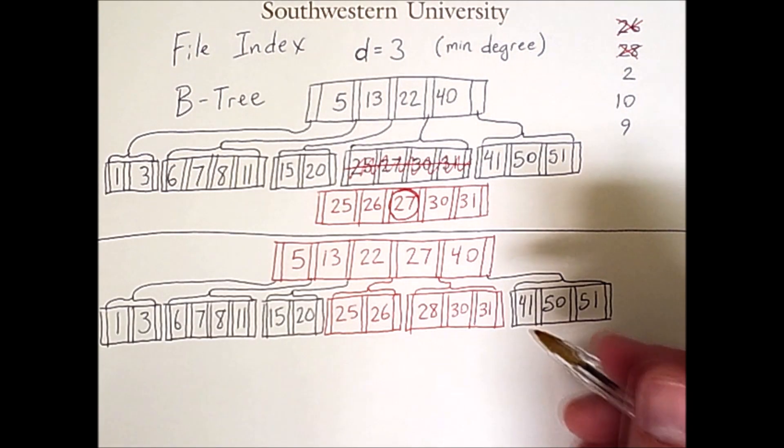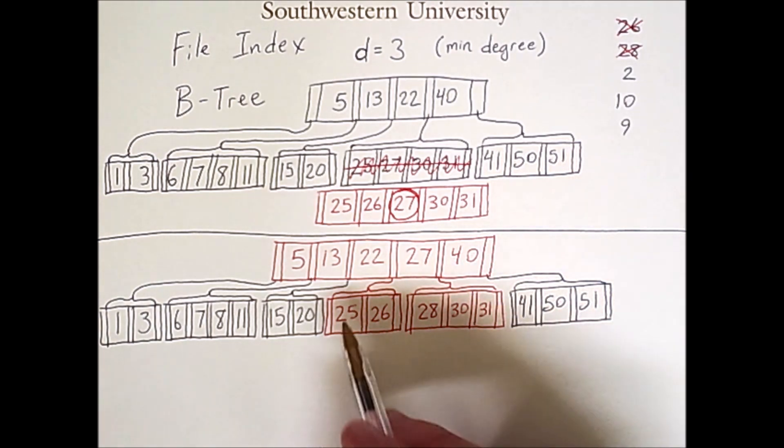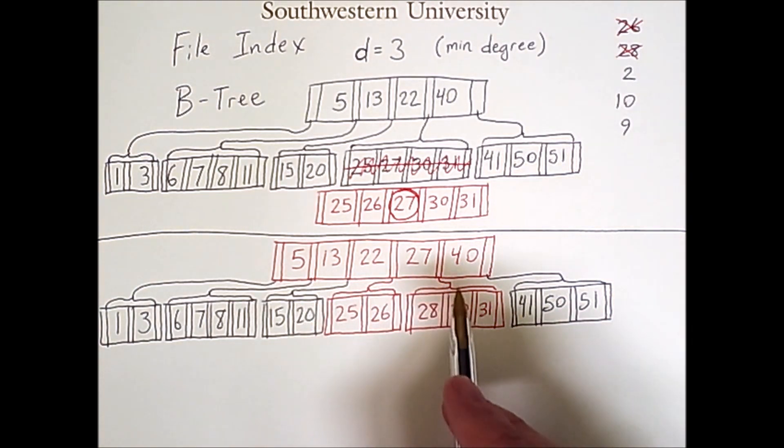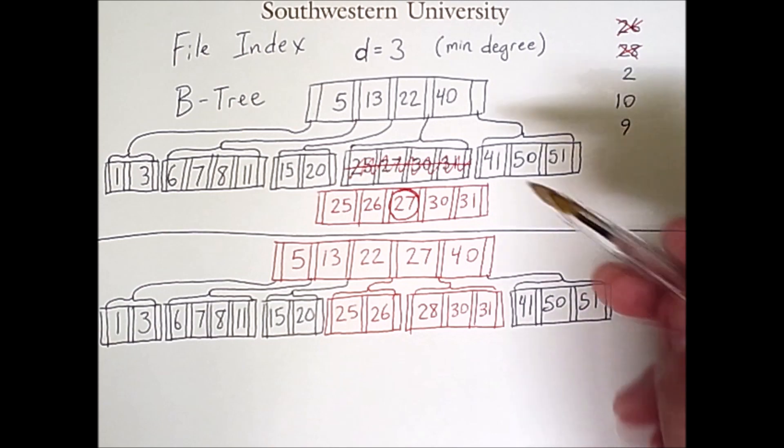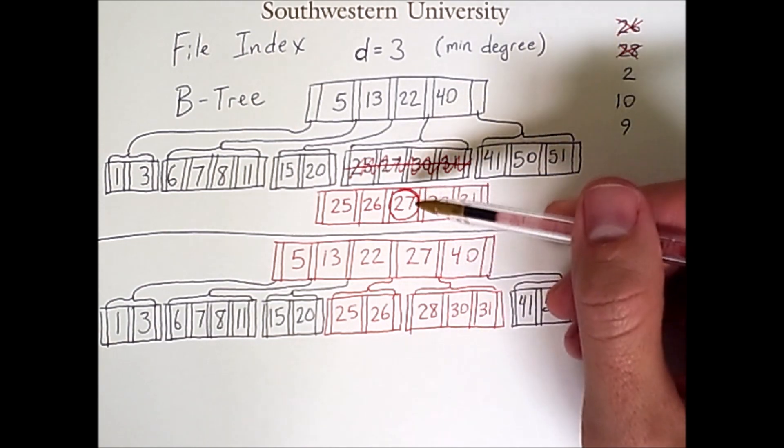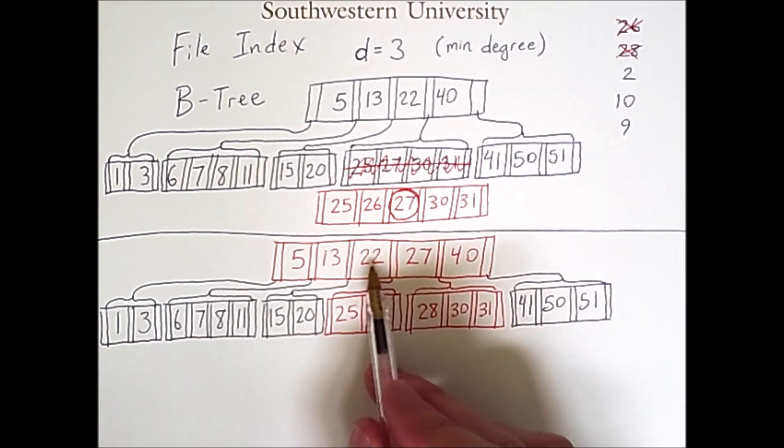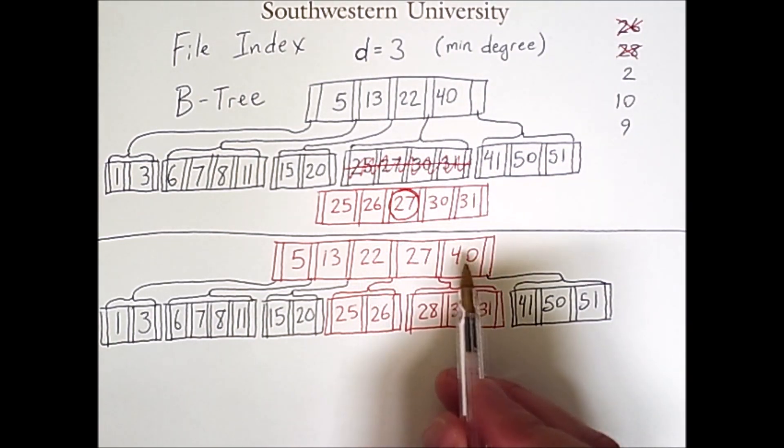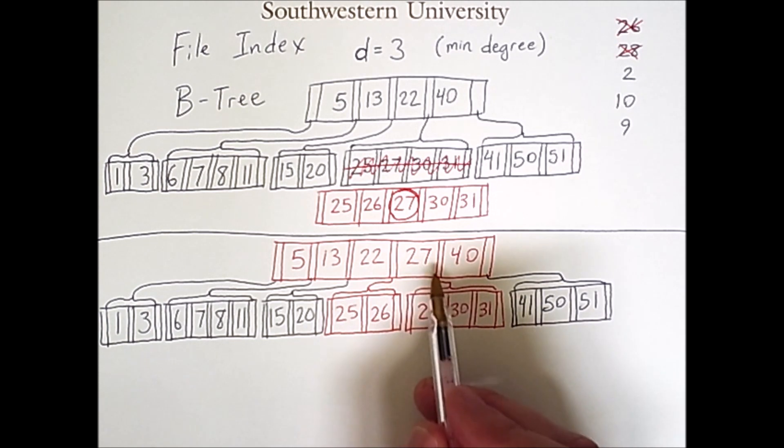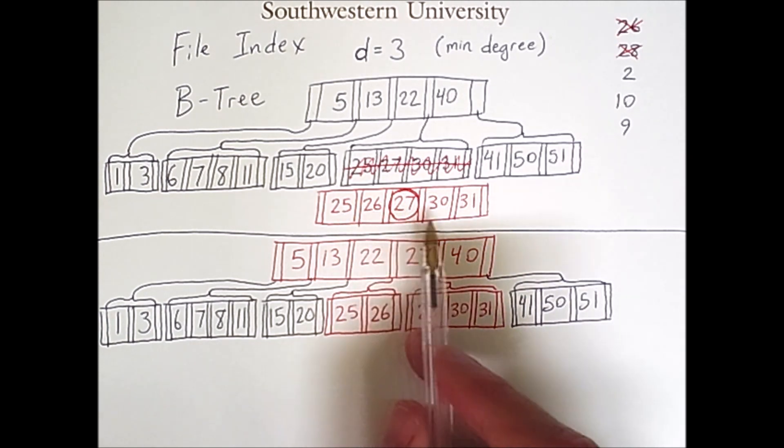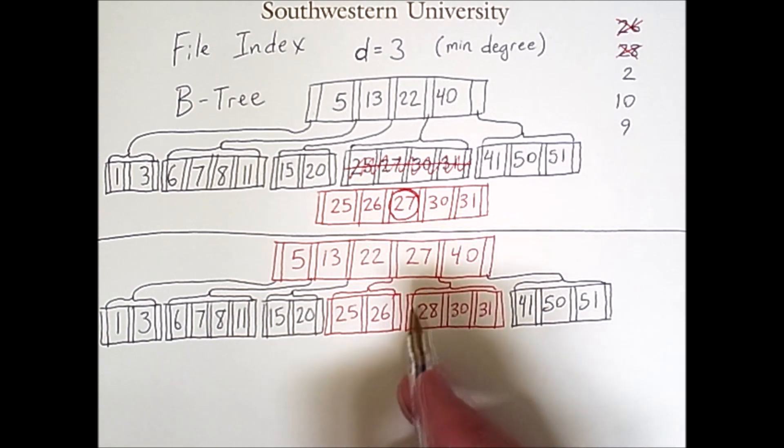So at this point we've just inserted 28, and I've marked the nodes that have changed in red. And you'll see that what happened between this step and this step is that the 27 moved up to the node above to be in between the 22 and the 40. That created an extra child link so that we could split this large node into two separate ones.